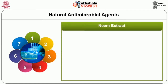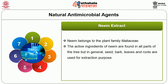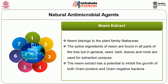The first example is neem extract. Neem belongs to the plant family Meliaceae. The active ingredients of neem are found in all parts of the tree, but in general seed, bark, leaves and roots are used for extraction. The neem extract has a potential to inhibit the growth of both gram-positive and gram-negative bacteria.